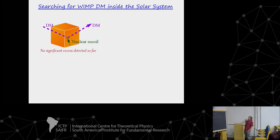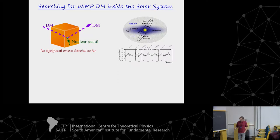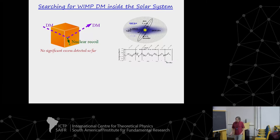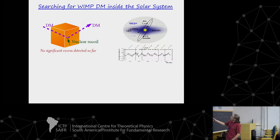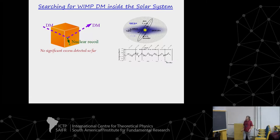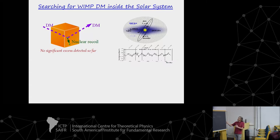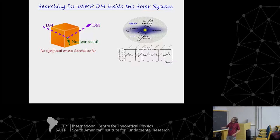The second method is a variant of the first, which exploits the fact that the orbit of the Earth is inclined with respect to the direction of the WIMP wind. The result of this inclination is that the flux of dark matter particles is larger in June and smallest in December. This leads to an annual modulation in the number of nuclear recoils, with a well-predicted amplitude and phase — maximum in June, minimum in December — with an amplitude depending on the parameters of your model.